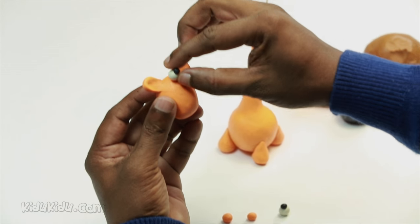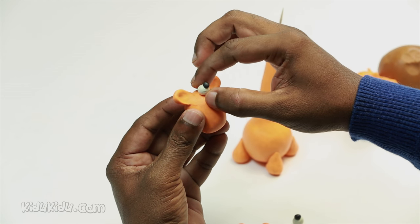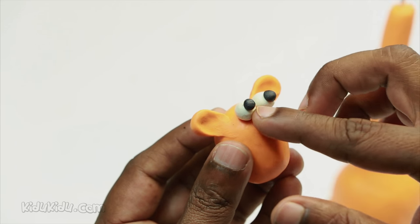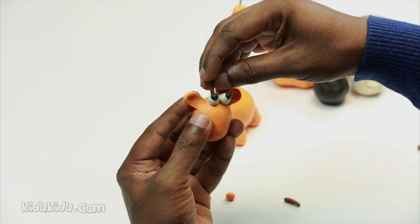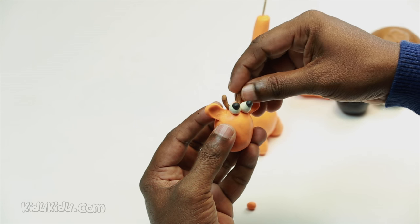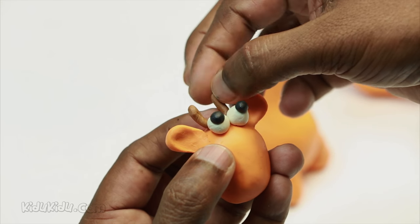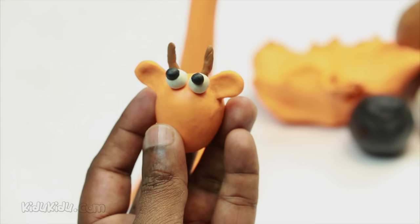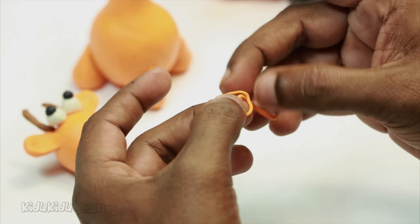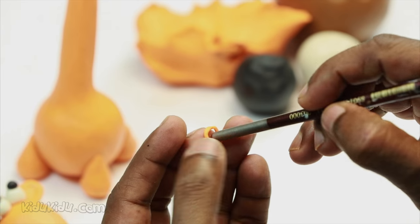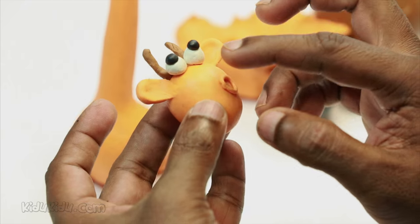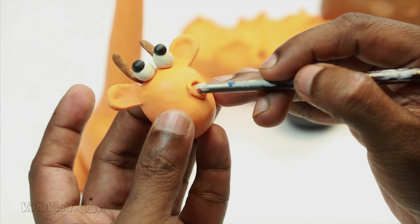Add the eyes to the face now. If we roll the yellow play-doh really thin, it looks like we can make rings. See how much like nostrils it looks on the face of the giraffe?